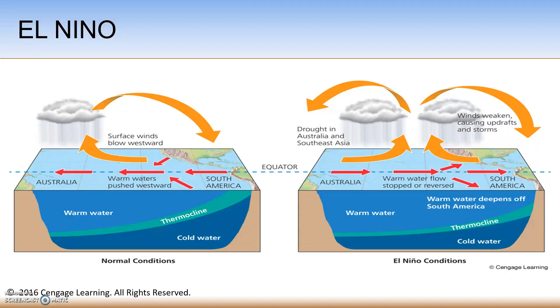Every few years, this shift in trade winds occurs, and it's known as the El Niño Southern Oscillation, or ENSO (E-N-S-O), and it can last for about one to two years.